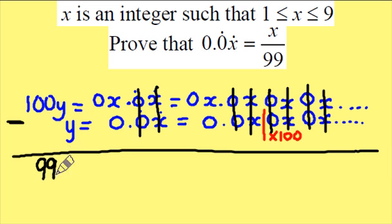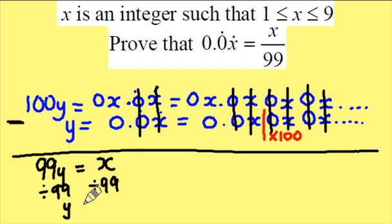So 99y's are equal to... I don't need this 0 here, so it's just x. Dividing both sides by 99, my final answer for my fraction will be the x of the numerator divided by 99 as the denominator.